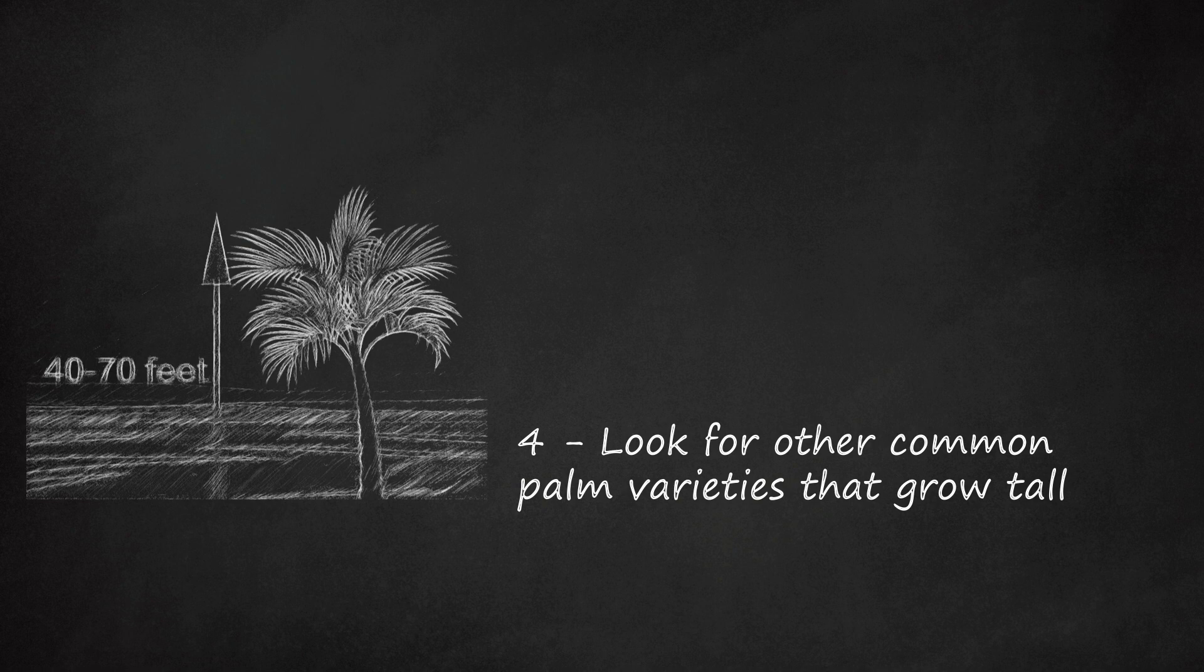Queen palms grow as much as 6 feet (2 meters) a year to a maximum height of 40 feet (12 meters). Their trunks are singular, gray, and smooth with scars of old fronds. The fronds are dark green and pinnate with doubled leaflets.